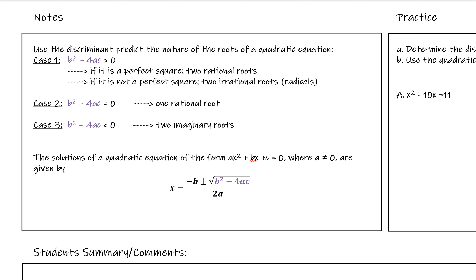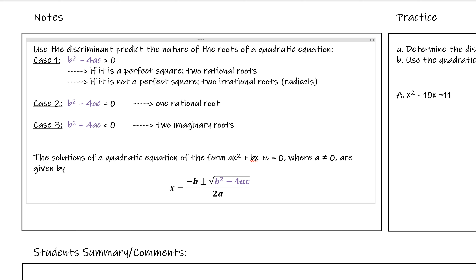The solutions of our quadratic equation are found when we have our quadratic in standard form: ax squared plus bx plus c equals zero. Whatever coefficient is with x squared is our a, the coefficient with x is b, and our constant is c. We take those and plug them into the quadratic formula to figure out our two answers. The discriminant is highlighted in the formula so you can see where it comes from. I have three examples for us to work on here — let's take a look.